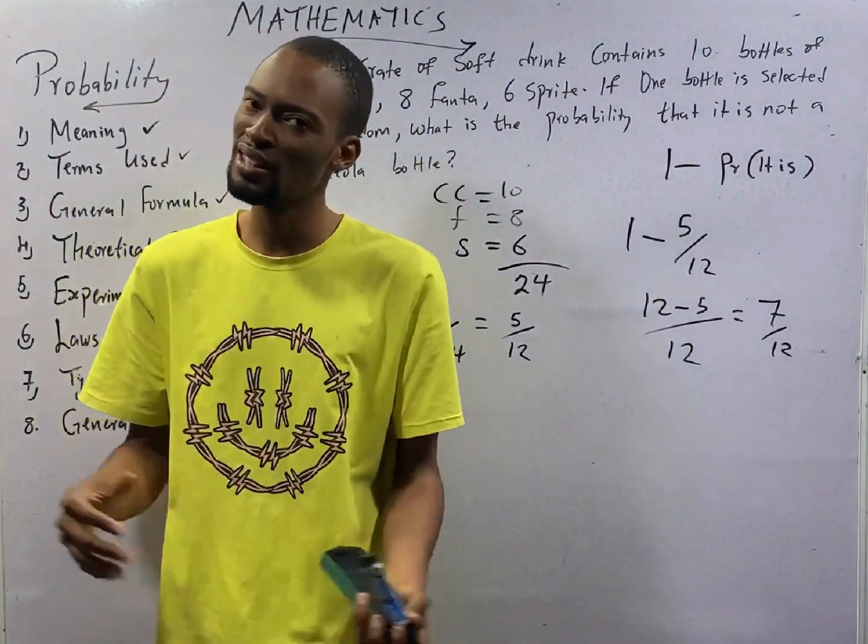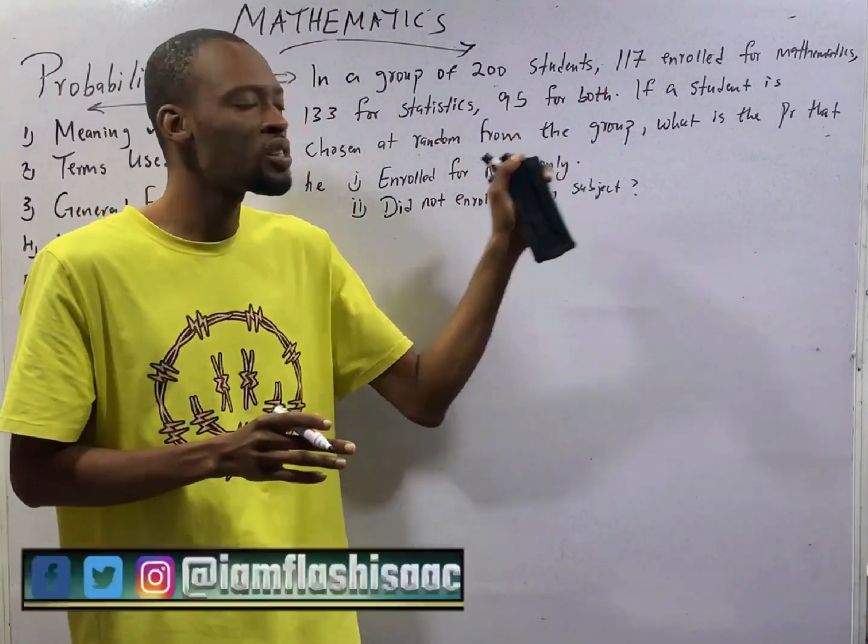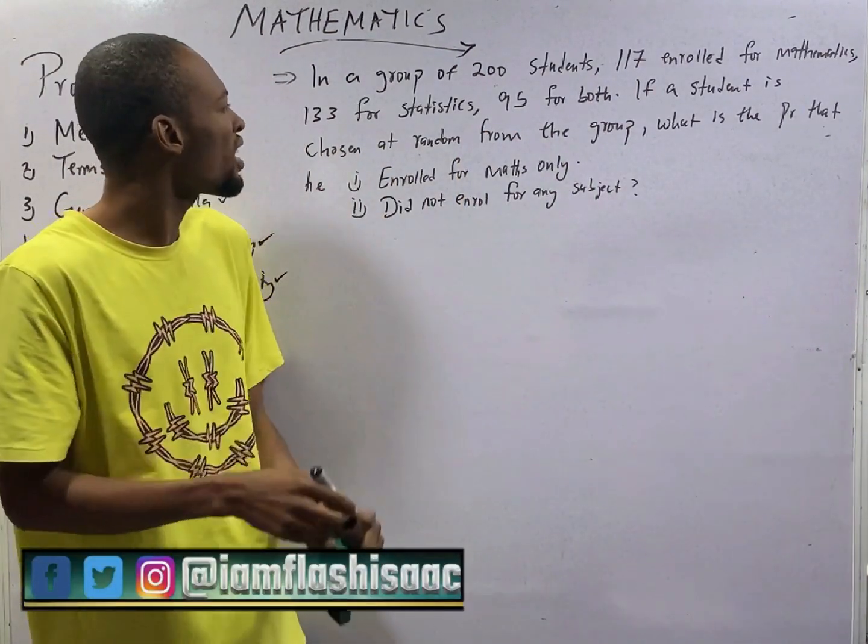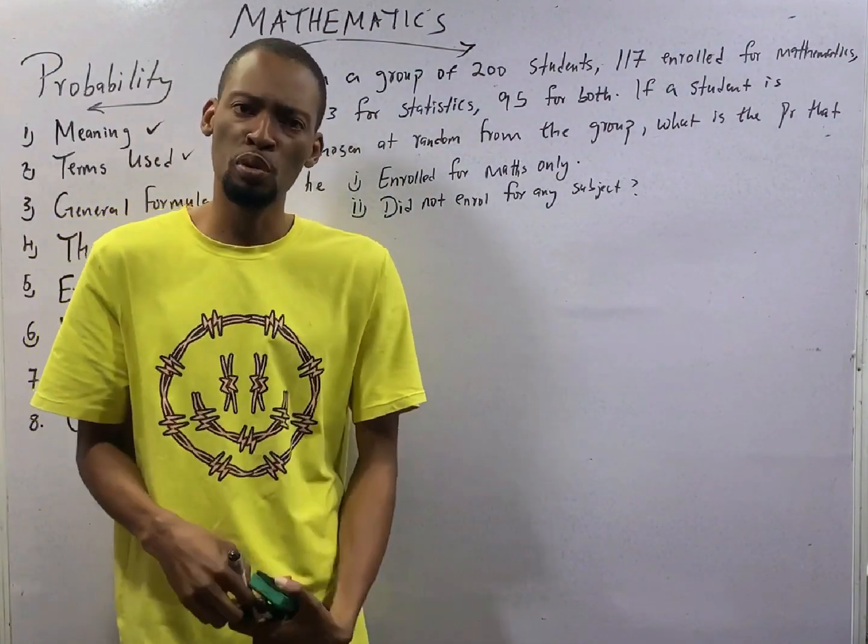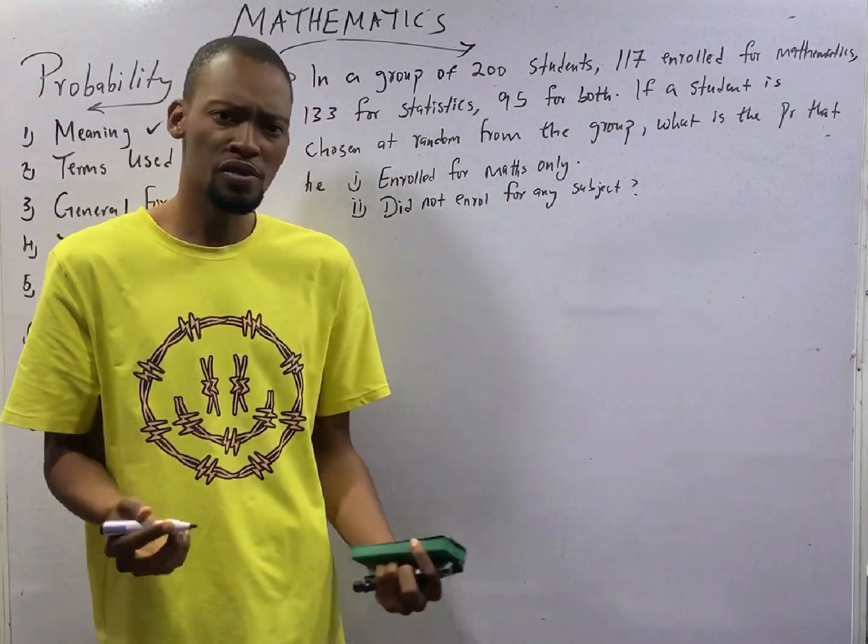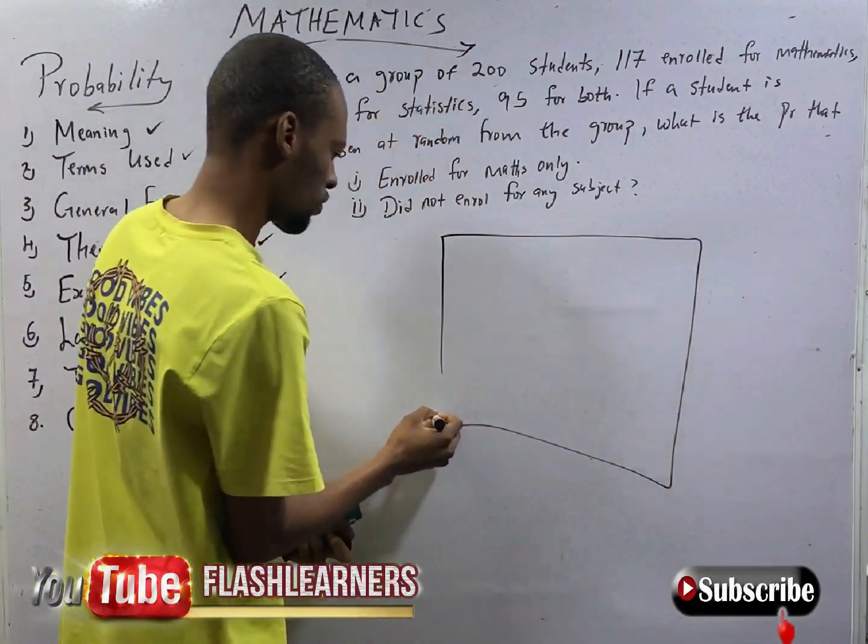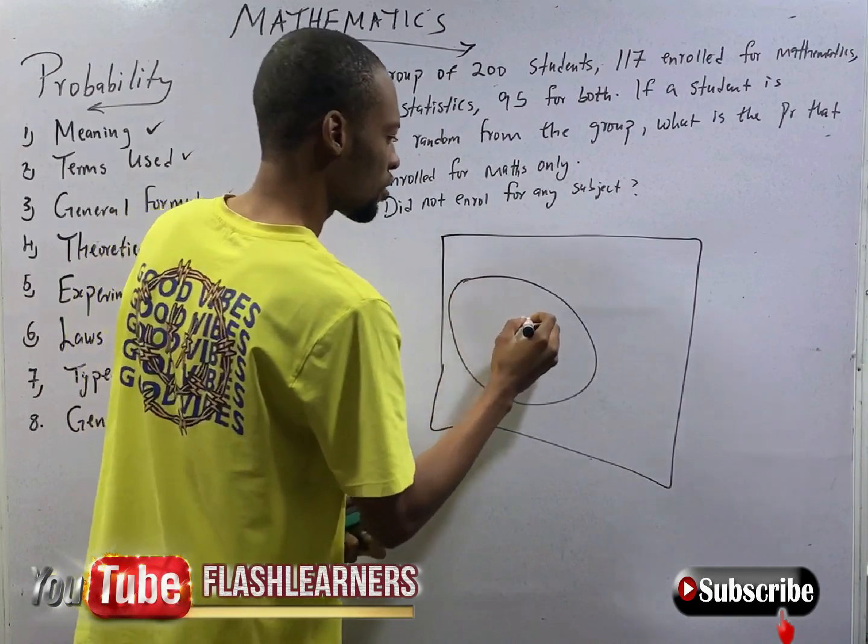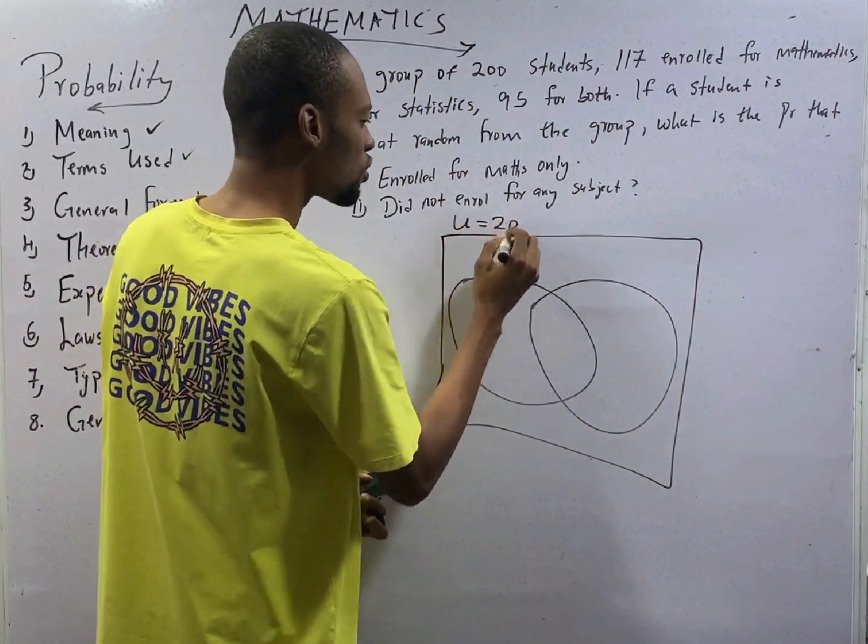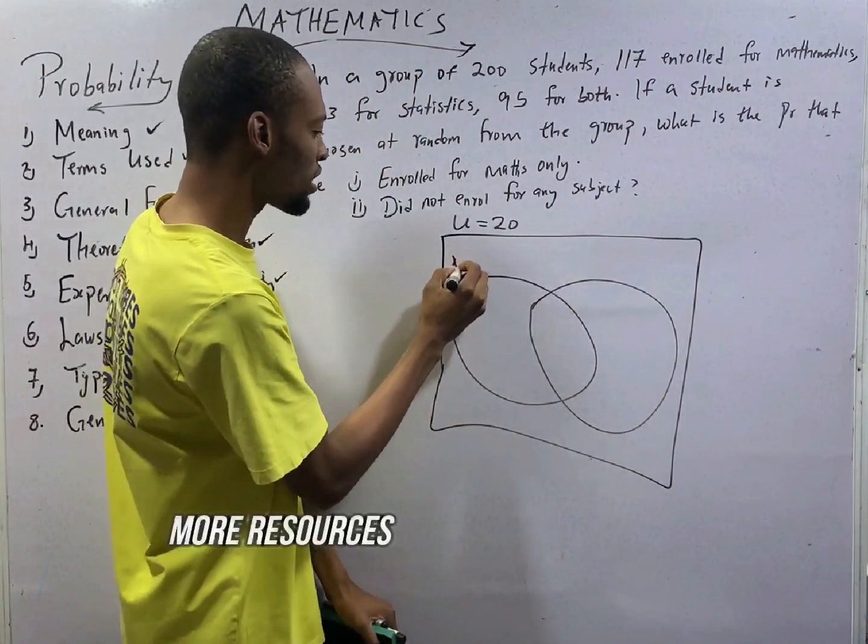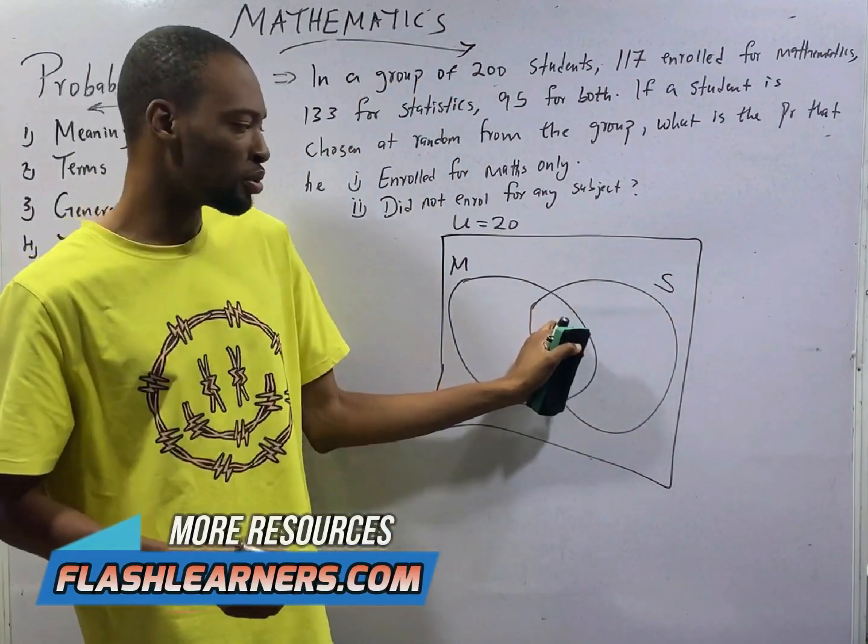Probability questions are usually very easy. A group of 200 students, 117 enrolled for mathematics, 133 for statistics, and 95 for both. This is a question involving two sets, which is something like this. The universal set is equal to 200. Now let's display M for mathematics and let S be for statistics. Let B be for both.